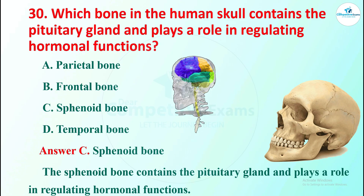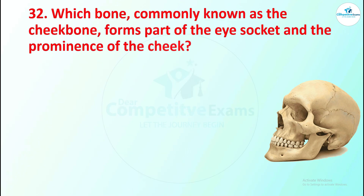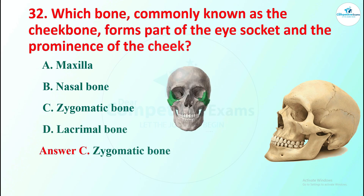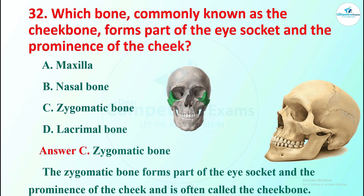Question 31: which bone, commonly known as the cheek bone, forms part of the eye socket and the prominence of the cheek? Options are maxilla, nasal bone, zygomatic bone, or lacrimal bone. The right answer is zygomatic bone. The zygomatic bone forms part of the eye socket and the prominence of the cheek, and it is often called the cheek bone.